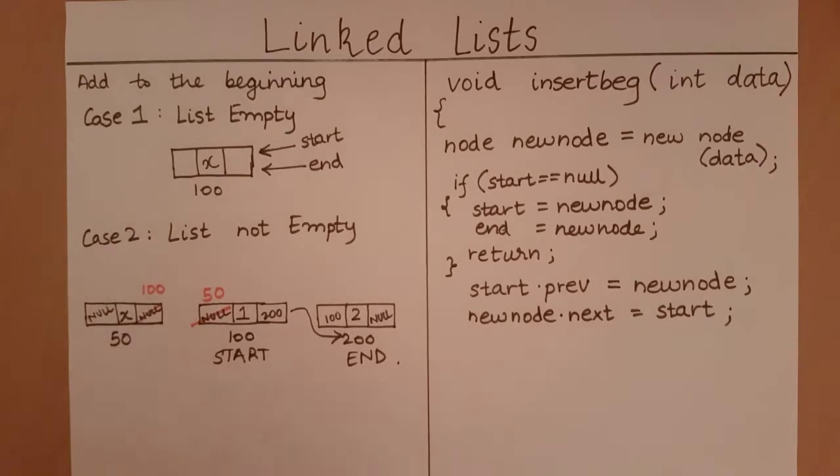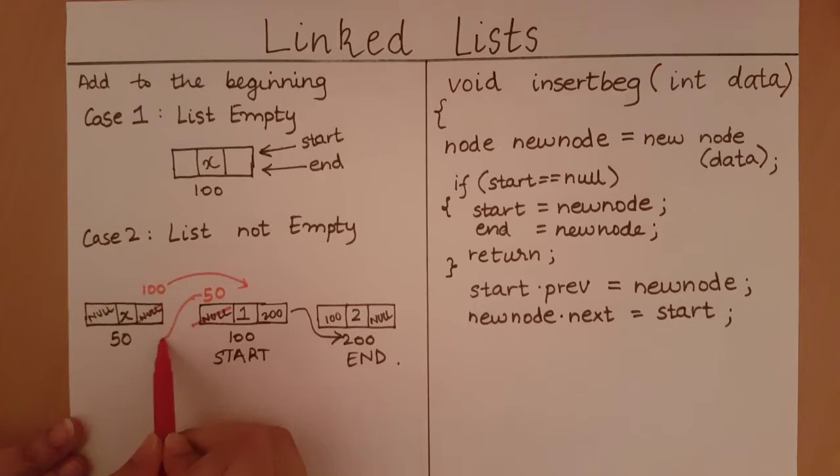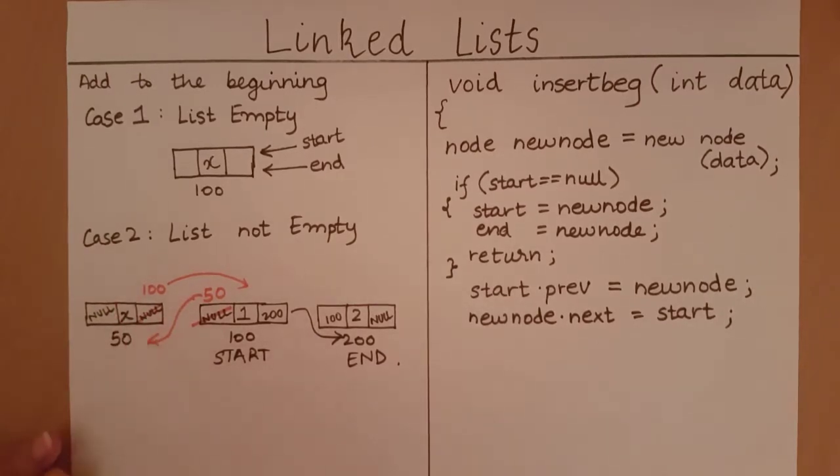So now, as you can see, we have ensured that this node is pointing to the next node as this one. And this node, its previous node, is pointing to the new node. So we have correctly set the pointers pointing in the correct directions. We want this to be the first node and we want this to follow that node. That has been ensured. We want this node to precede this node and that has also been ensured with the pointers.